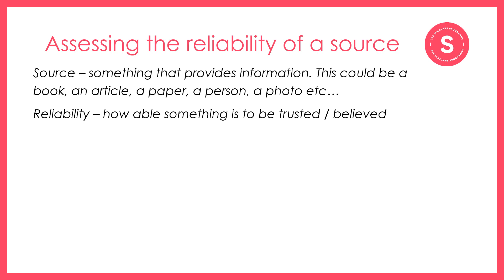I'm going to first talk generally about how we can assess the reliability of a source. Before doing this I want to go through a couple of keywords to make sure we're all on the same page. A source is something that provides information — this could be a book, an article, a paper, a person, a photo, etc. And reliability is how able something is to be trusted or believed.